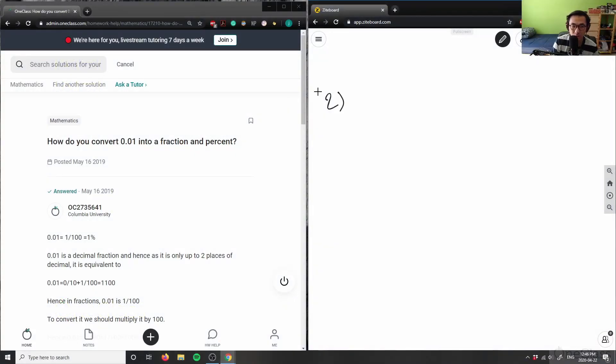Pretty basic question here is how to convert 0.01 into a fraction and a percent. So I'm converting 0.01 into fraction and percent. Let me do a percent first actually because this is probably easier for you.